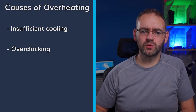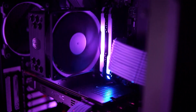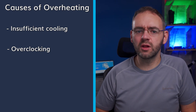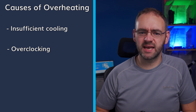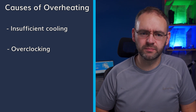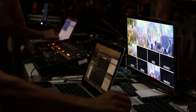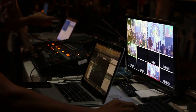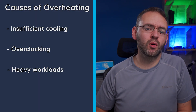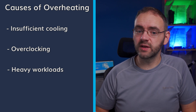Overclocking, which refers to increasing the clock speed of your CPU or GPU beyond the manufacturer's recommended settings in order to achieve higher performance — while overclocking can boost performance, it can also generate excess heat, leading to overheating if not properly managed. Running demanding applications or performing resource-intensive tasks for extended periods can put a significant load on your CPU and GPU, causing them to generate more heat than usual. This heat, if not dissipated efficiently, can lead to overheating.